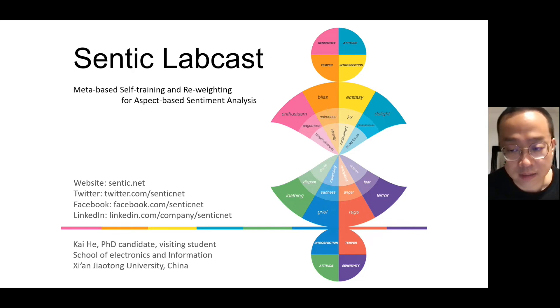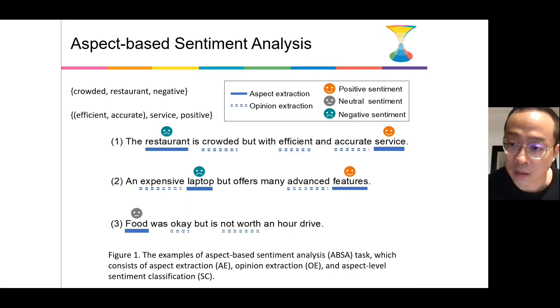First, let's see what is the task, aspect-based sentiment analysis. This task is an entity-oriented and fine-grained task. The task consists of three subtasks, including aspect term extraction, opinion extraction, and aspect-level sentiment classification.